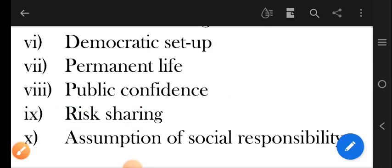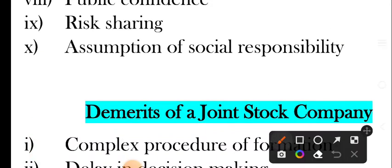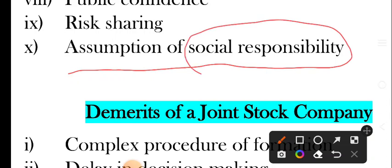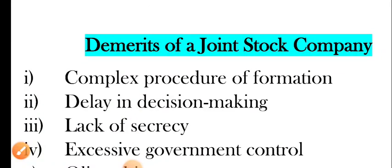Next one is assumption of social responsibility. Aapne corporate social responsibilities ke baare mein pada hoga. Yahan pe companies ke upar responsibility aati hai society ke standard of living ko enhance karne ki. Now we will discuss about the demerits of a joint stock company.